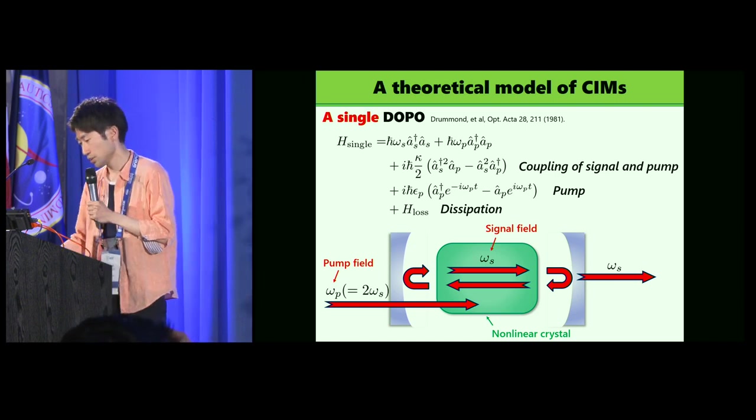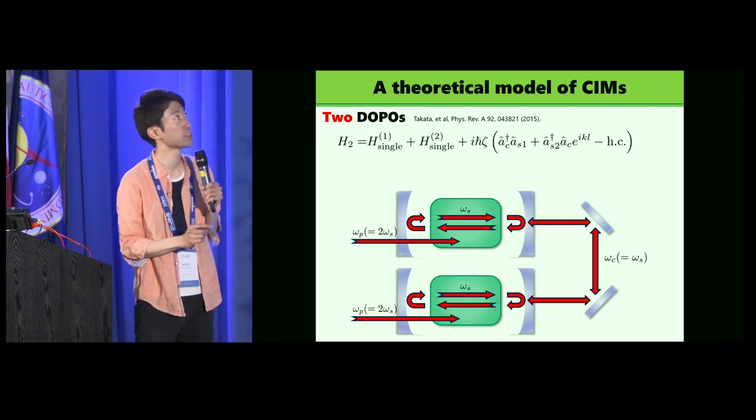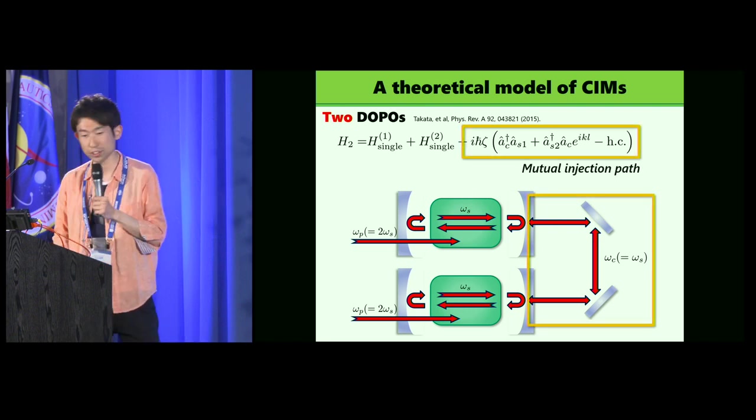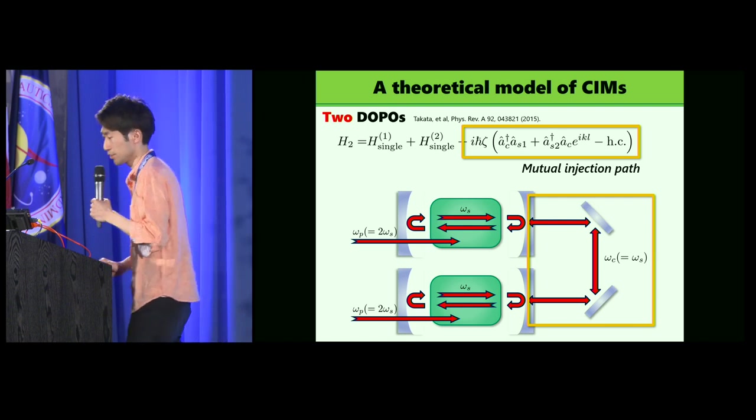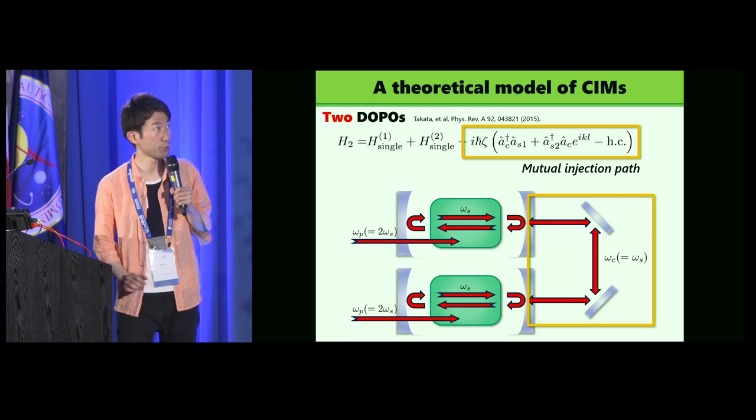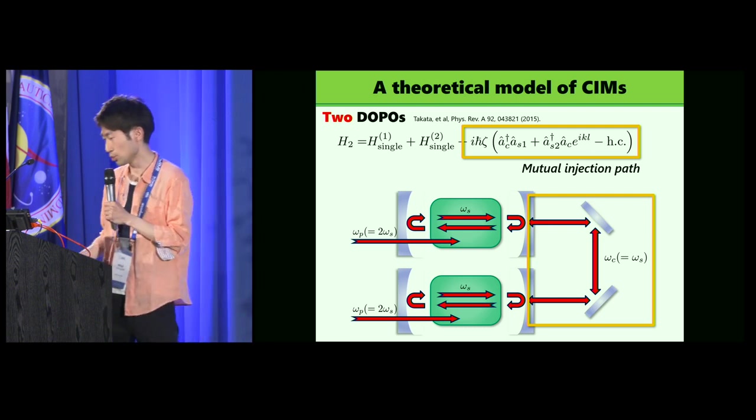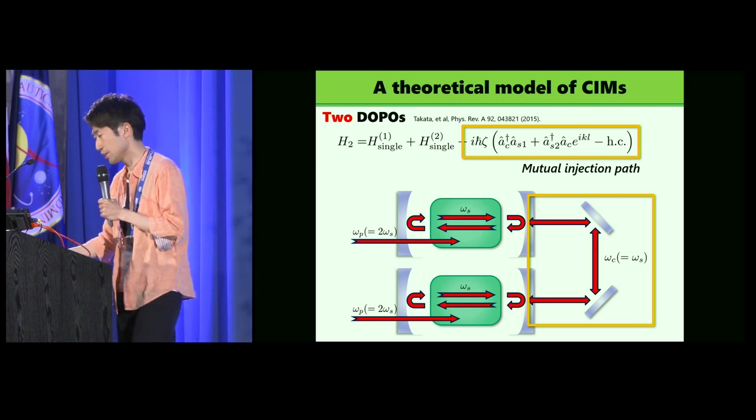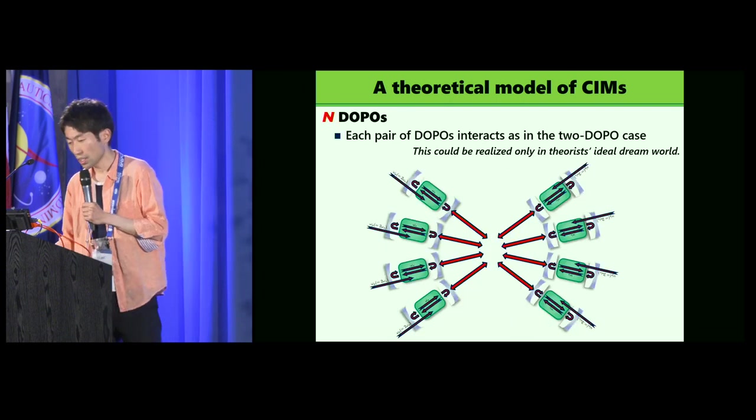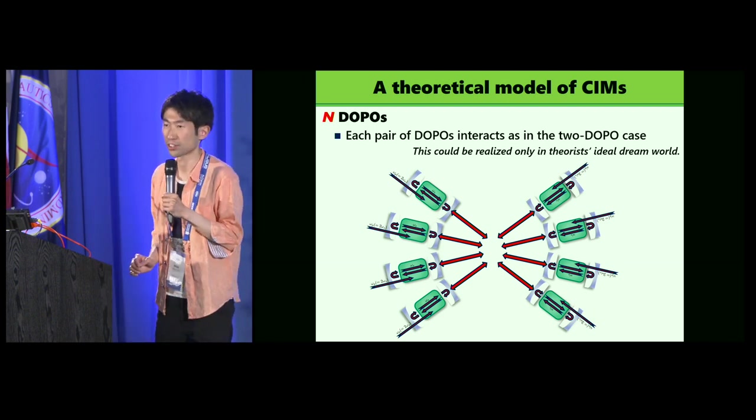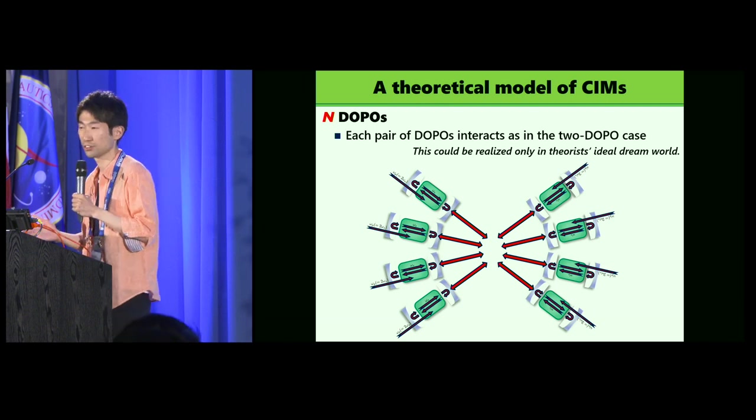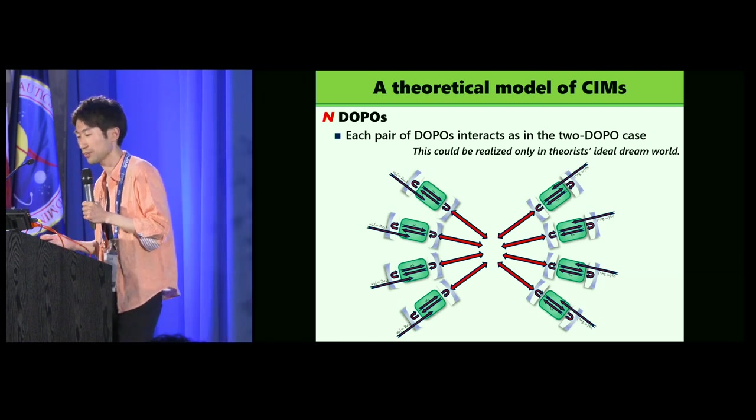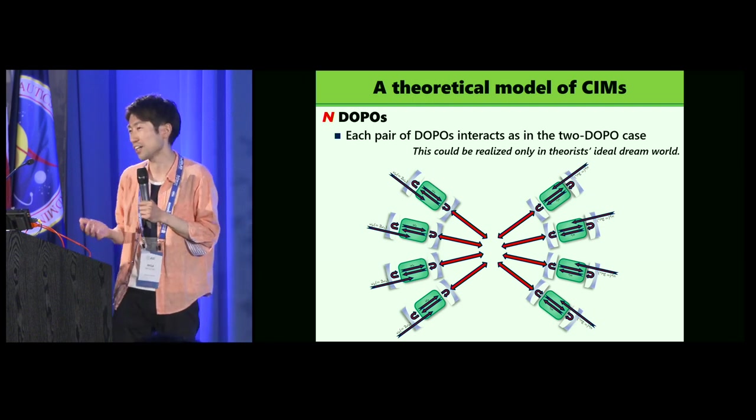We next consider two DOPOs there, two cavities, and we also have mutual injection paths that we write at this interaction between the two DOPOs. The signal field from a DOPO is injected to the other DOPO mutually. We control strength and sign of interactions by tuning the lengths of paths. We generalize that into N DOPOs. We assume each pair of DOPOs interacts as in the two DOPO case. We don't consider how we implement that interaction into the actual experimental setting. So I know that this could be only in theoretical idea during work.